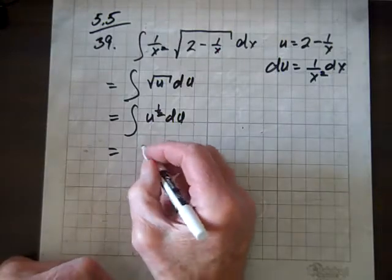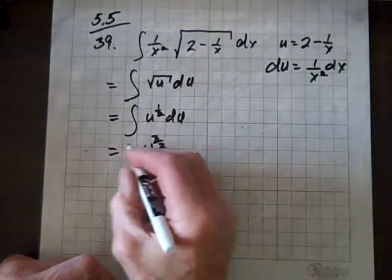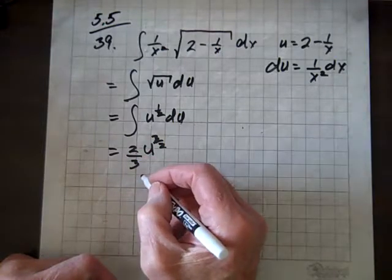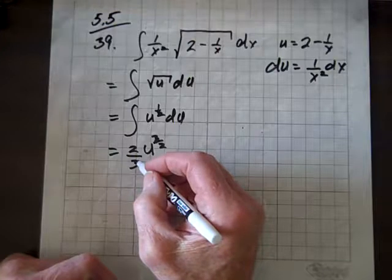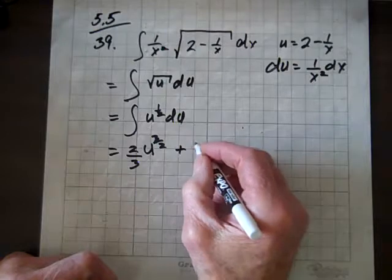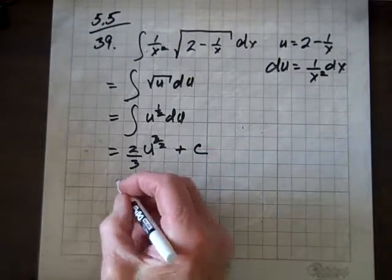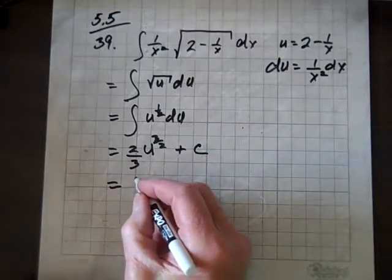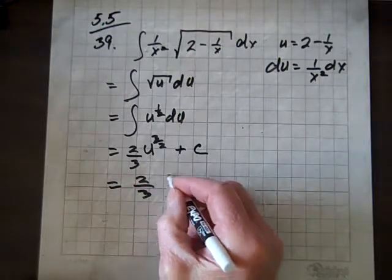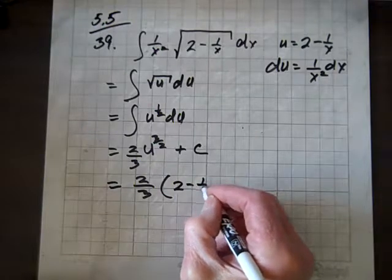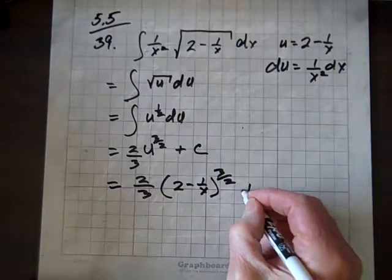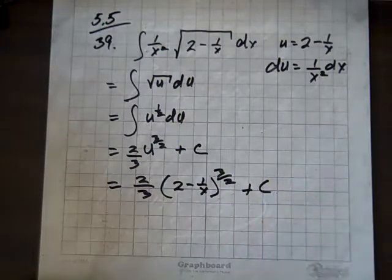Which equals u to the three-halves. We've got a coefficient of two-thirds here. That's when we take the derivative of that, then those reciprocals, the product becomes 1, and that's plus C. We need that constant, unknown constant. So that's 2 over 3 times 2 minus 1 over x to the three-halves plus C. And we are done.